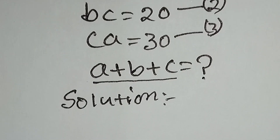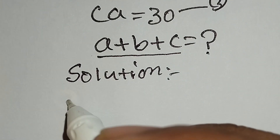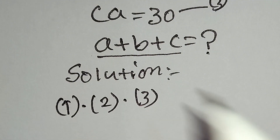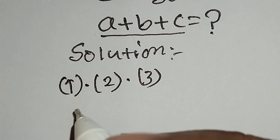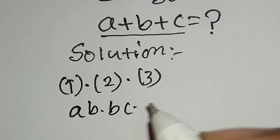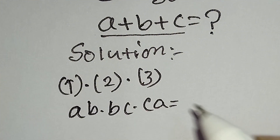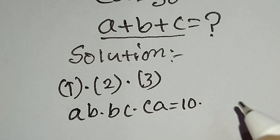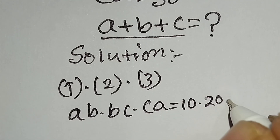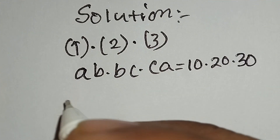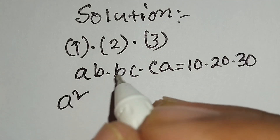Now we will multiply these three equations together. Equation number one times equation number two times equation number three. The left side gives AB times BC times CA, and the right side gives 10 times 20 times 30. Here A times A is A squared, B times B is B squared.